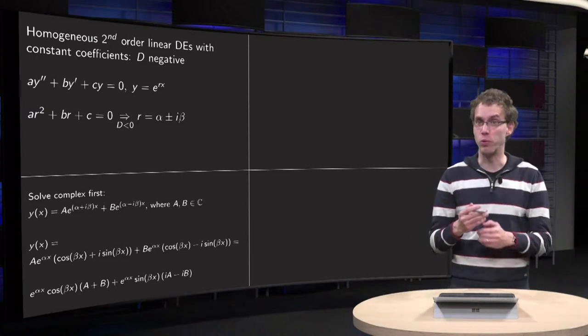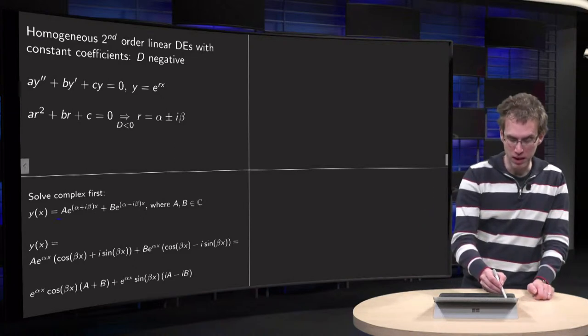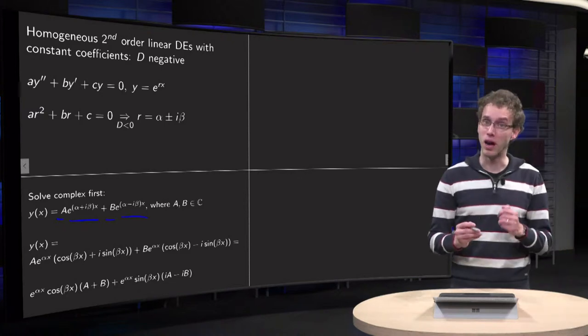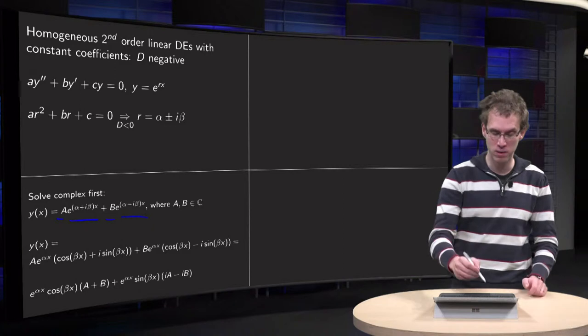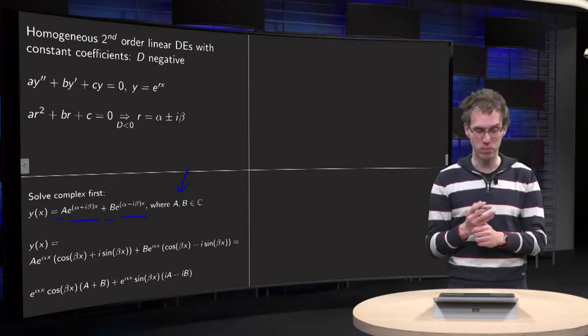So what would we get as complex solutions? Well, y would be Ae^(r₁x) + Be^(r₂x). Where now, because we are looking fully complex, A and B are both in ℂ, complex numbers.